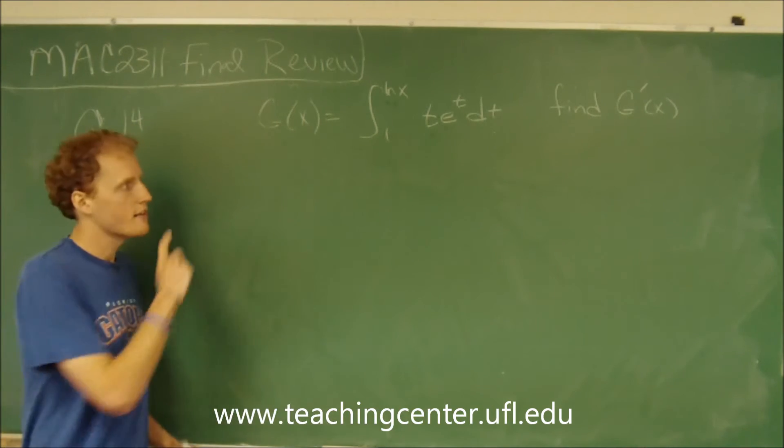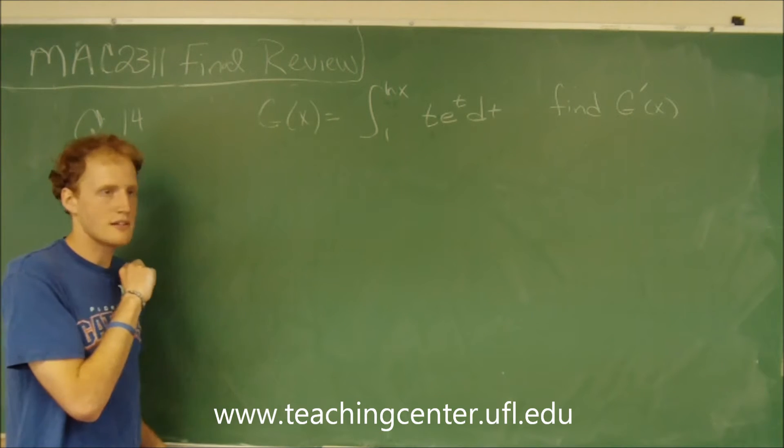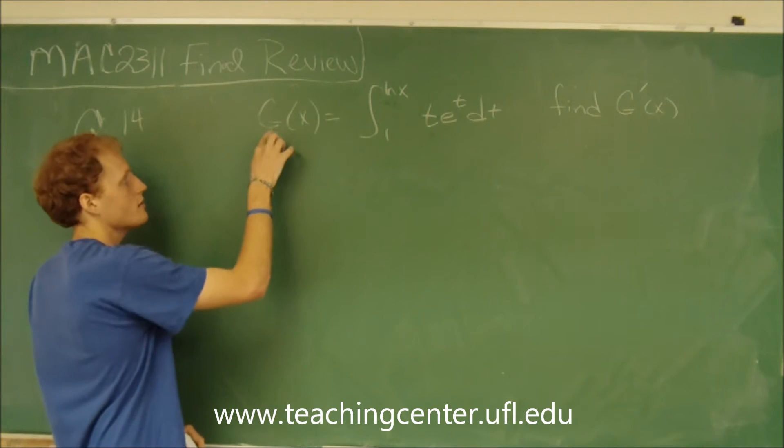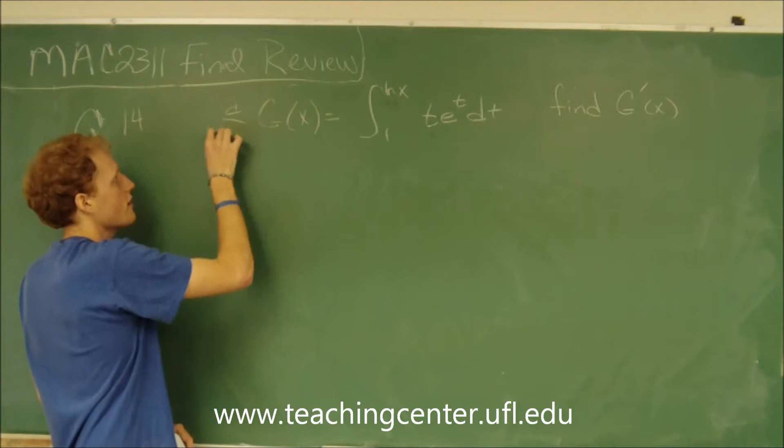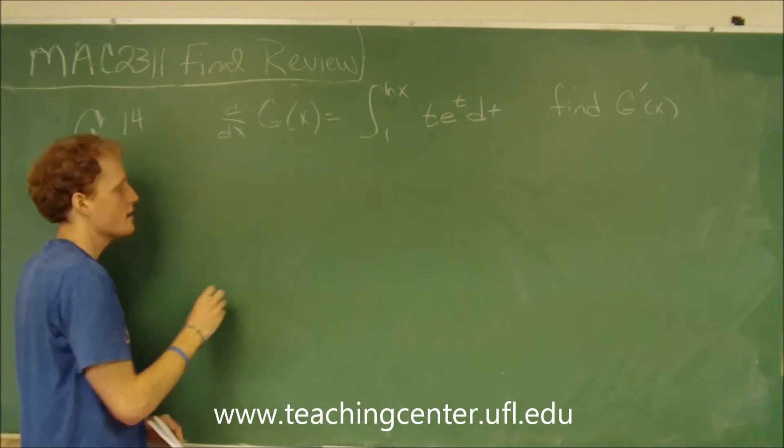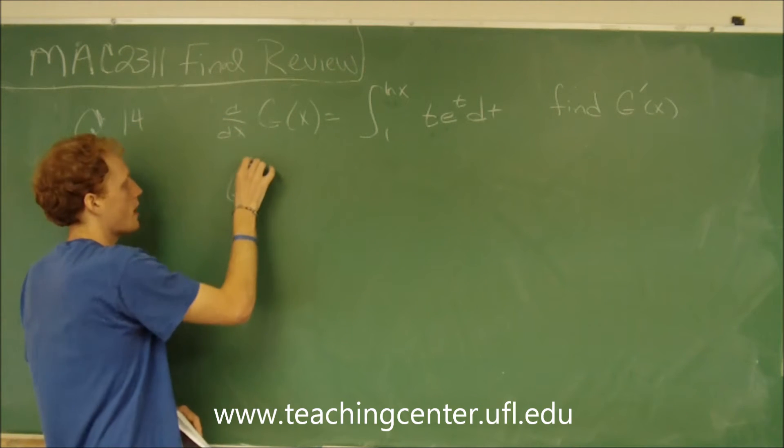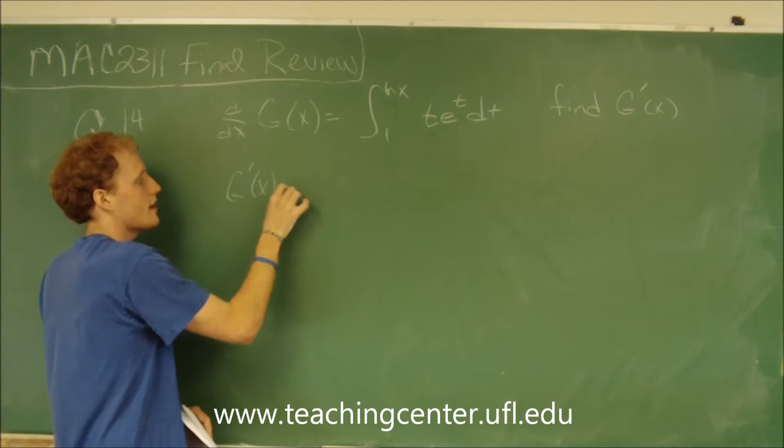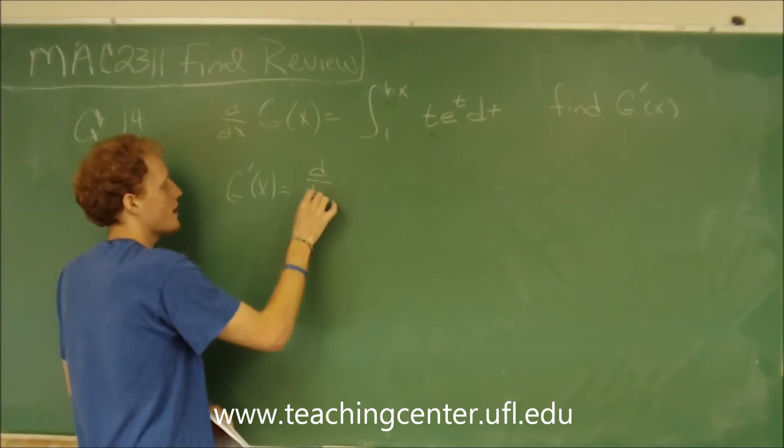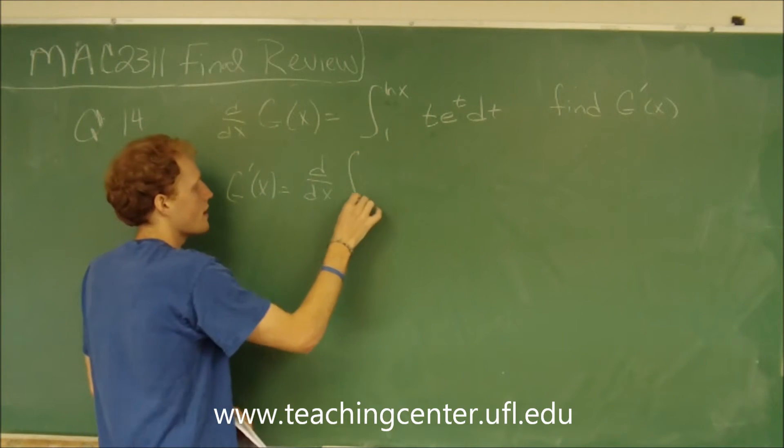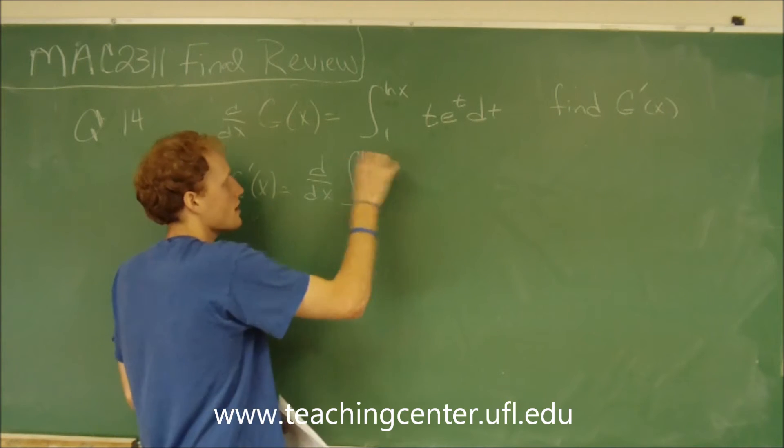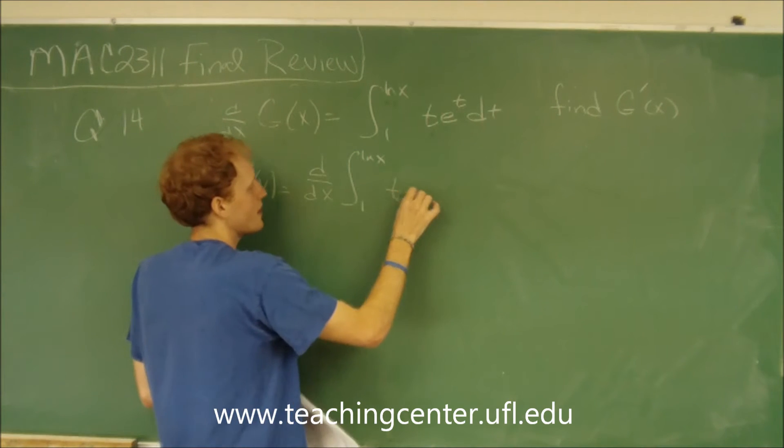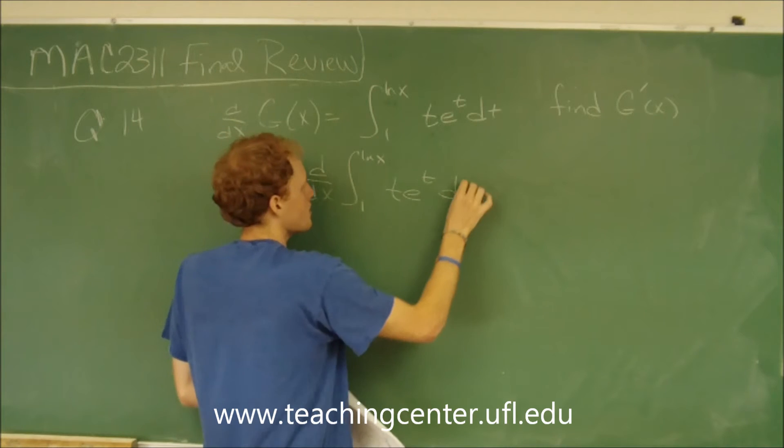So this is asking us to find the derivative of this equation. We're going to take the derivative of both sides, so g prime of x equals d/dx of the integral from 1 to the natural log of x of t times e to the t dt.